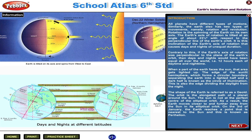The Earth's axis of rotation is tilted at an angle of about 23.5 degrees with respect to the perpendicular line of the Earth's orbit. It is this inclination of the Earth's axis of rotation that causes days and nights of unequal duration.